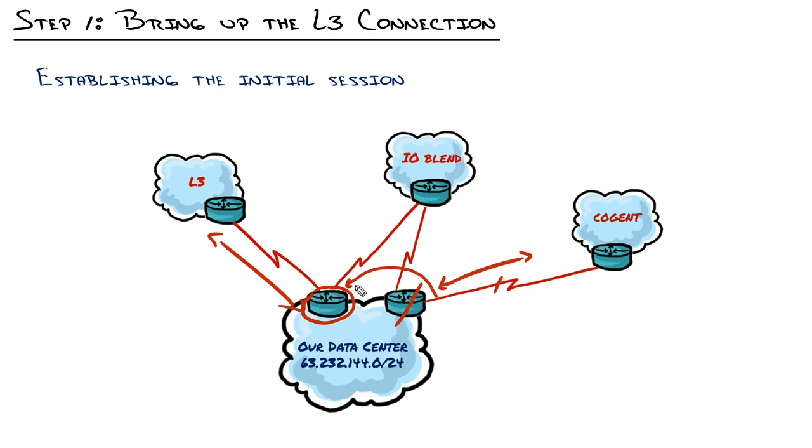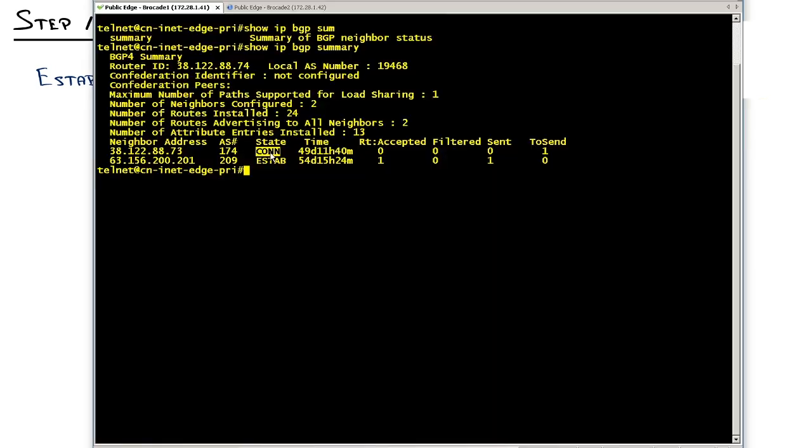We can move that connection over to here. And I've already got the configuration on there that it would establish and start exchanging routes with Cogent. Vice versa, I've got this one configured for Level 3, but it would also be staying in that connecting state because it doesn't actually have the physical connection plugged into it.